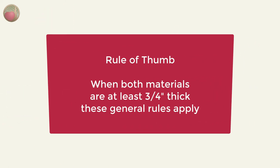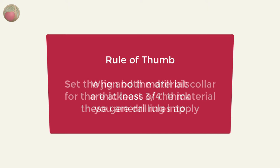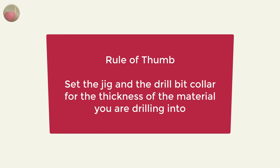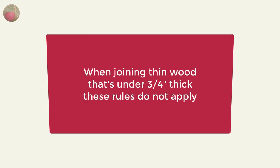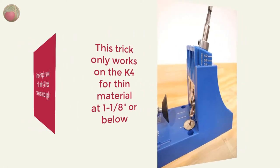Here's a rule of thumb for setting the jig and drill bit. When both materials to be joined are at least three quarter inch thick, the following general rules apply: Set the jig and the drill bit collar for the thickness of wood you're drilling into and choose the screw length based on the thickness of the wood you're screwing into. When you're joining thin wood like half inch plywood or such then those rules don't hold.